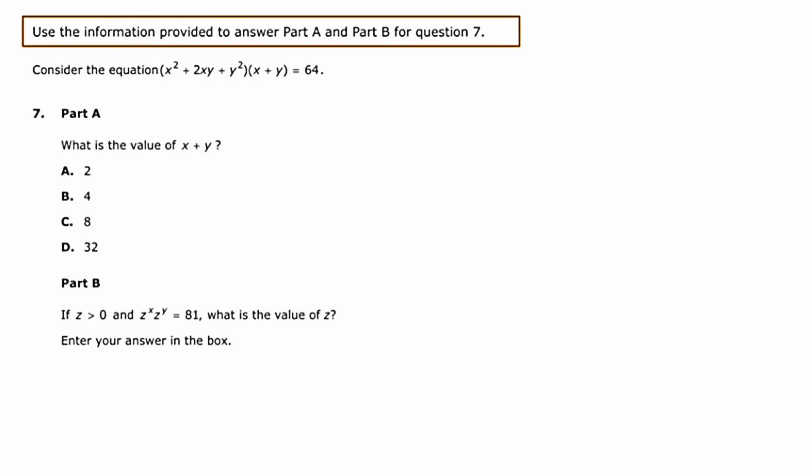My first reaction to this problem is to focus on the trinomial off to the left. I feel like I can factor that, and in fact I can, and it factors as x plus y quantity squared. So I've got the x plus y quantity squared, which is the factored form of the trinomial that I've highlighted, times the x plus y, which is already there, equals 64.